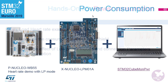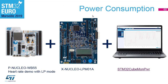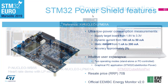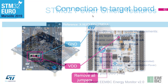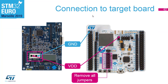To do this measurement we are going to use the power shield, which is this board — it's a voltage supply that measures current. We will supply the Nucleo from the power shield, and the power shield communicates with the PC application Cube Monitor Power through the virtual COM port. The tool measures with a very big dynamic range, from 100 nanoamps to 50 milliamps, at a frequency of 100 kilohertz — quite a nice tool especially for its price.